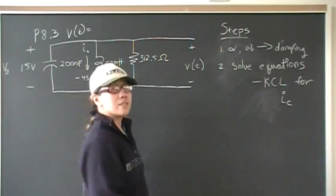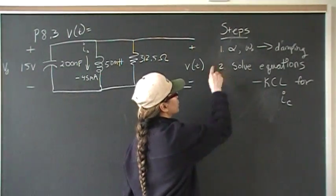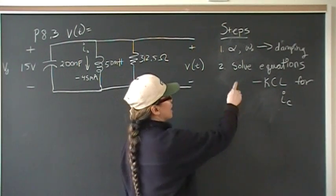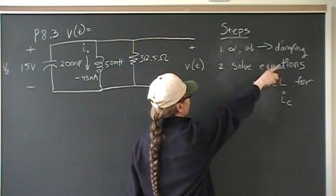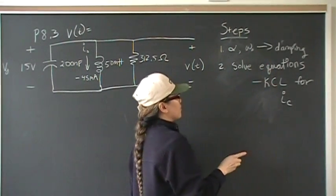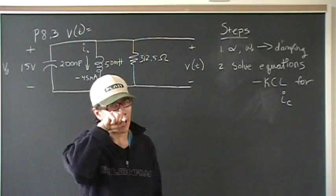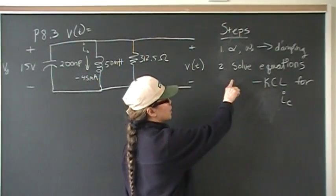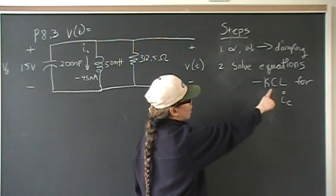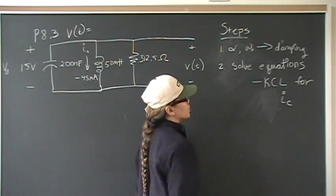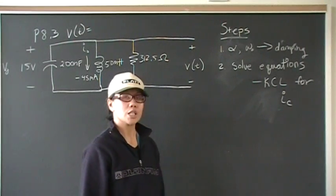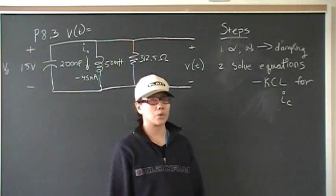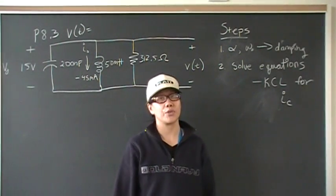The steps that you're going to take to solve this is, the first thing you have to do is to find out what form the voltage equation will take. And to do that, we have to find alpha and omega naught in order to determine the damping. After we know the damping, we'll know which set of equations that we'll be using to solve. And once we know the equations, we simply solve the equations. We'll need to use KCL in order to find the current through the capacitor in order to solve for dV/dt in one of the conditions for your coefficient equations.